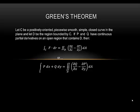In this video we're going to look at Green's Theorem. Green's Theorem says: let C be a positively oriented piecewise smooth simple closed curve in the plane, and let D be the region bounded by C. If P and Q have continuous partial derivatives on an open region that contains D, then the line integral of some vector-valued function over curve C is equal to the double integral over the region bounded by C of the partial of Q with respect to X minus the partial of P with respect to Y.